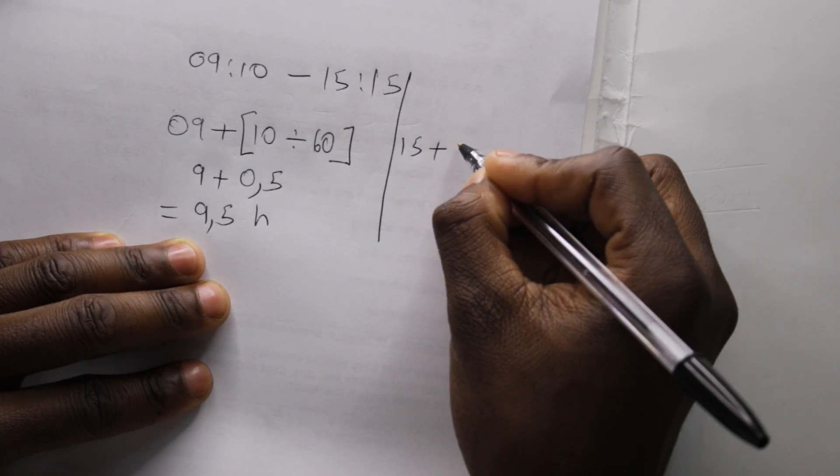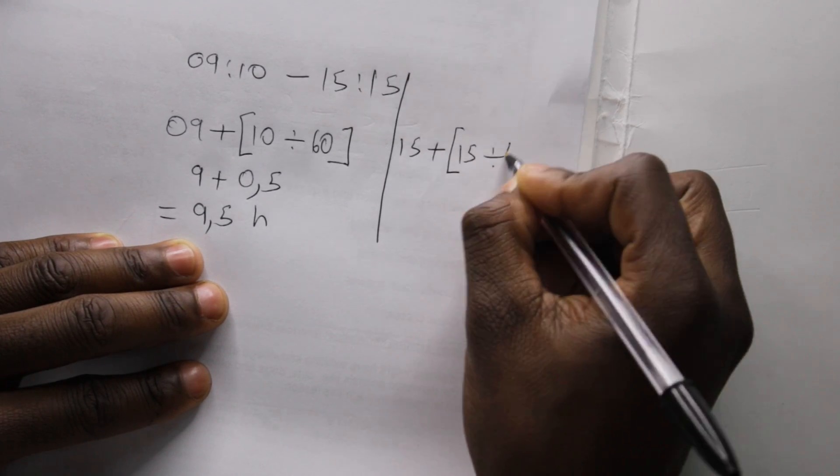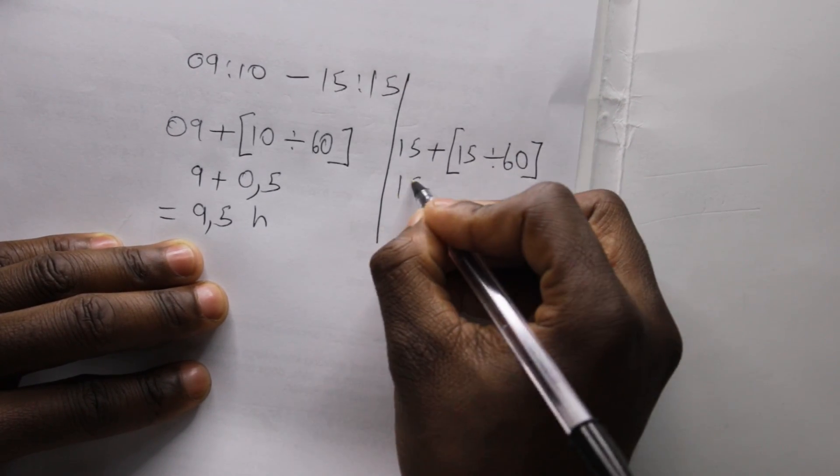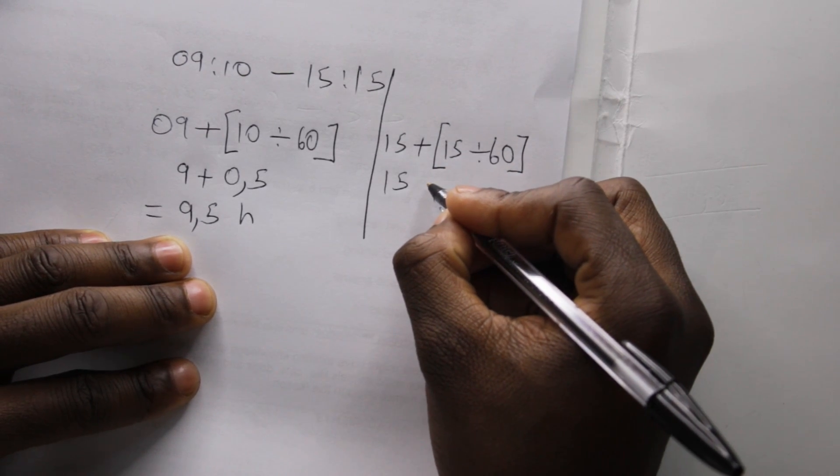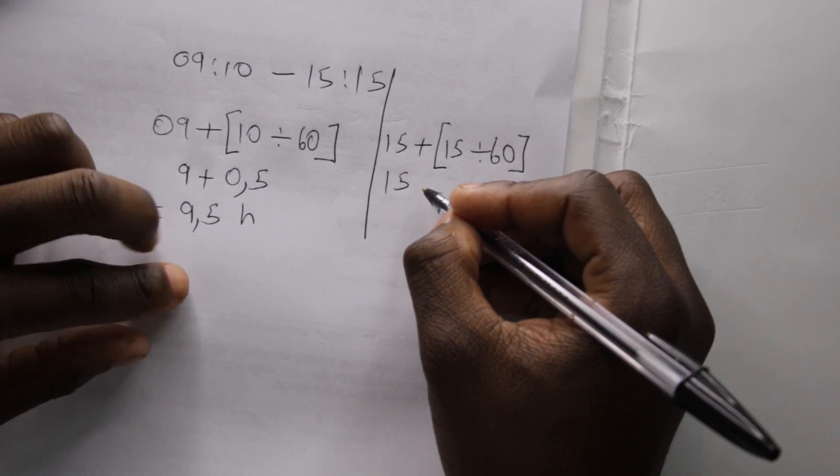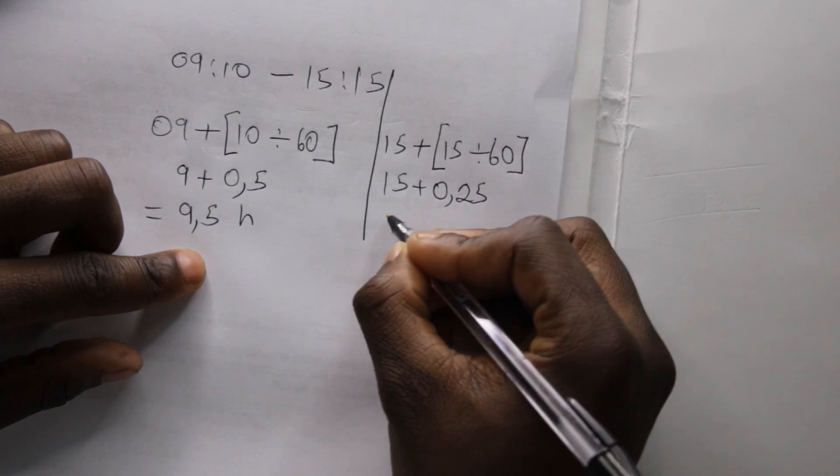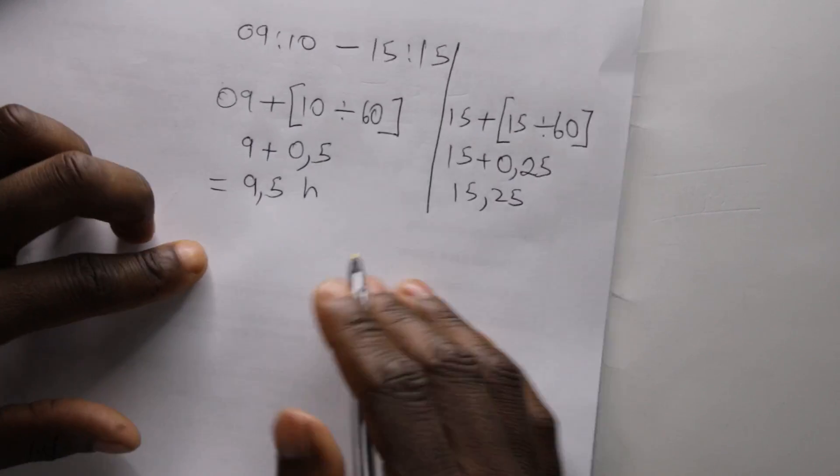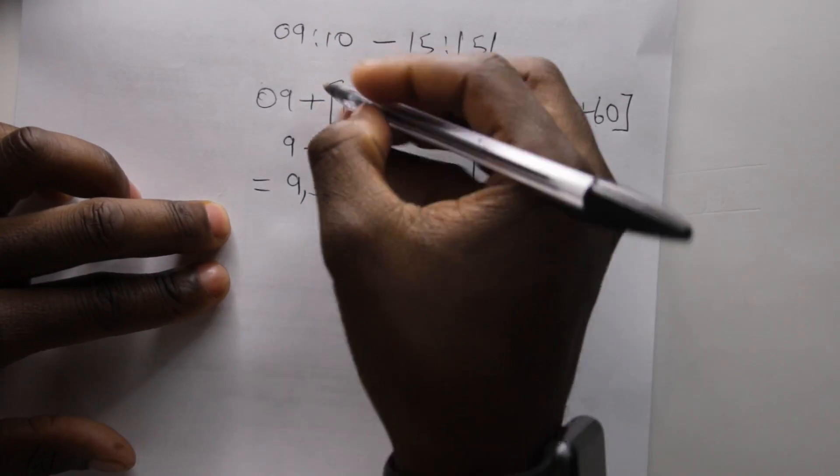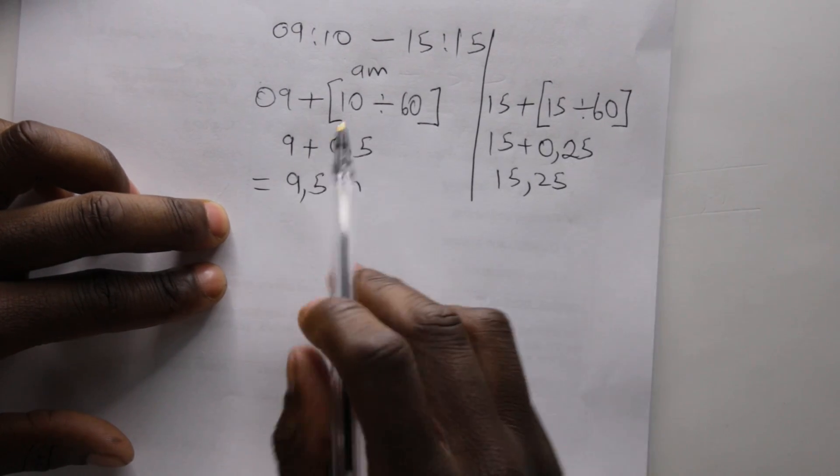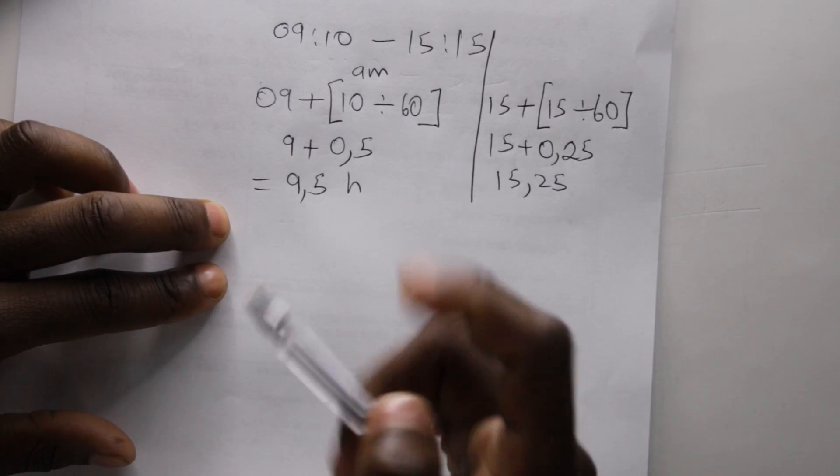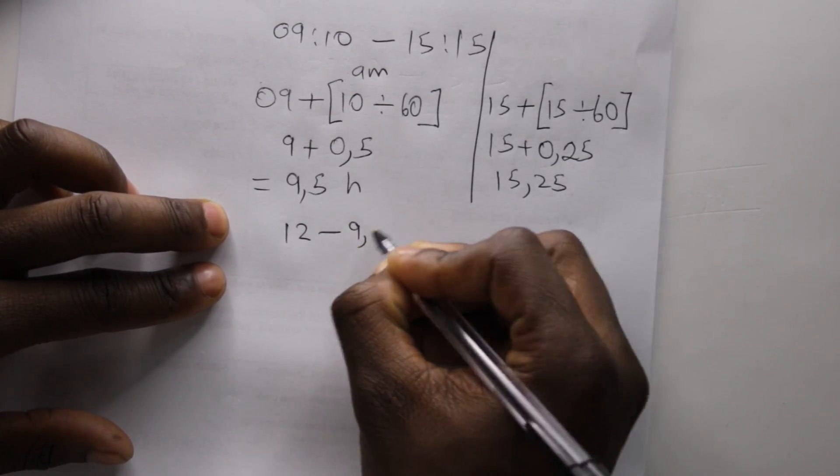Then we also have the 15, 15 plus 15 divided by 60, we also convert it to hours, and that will give us 0.25, so 15.25. The first thing to do on the row of AM is that the 10 minutes past 9 is before 12, so we must add 12 and minus 9.5 and come with the remaining minutes and hours. That will give us 2.5 hours.